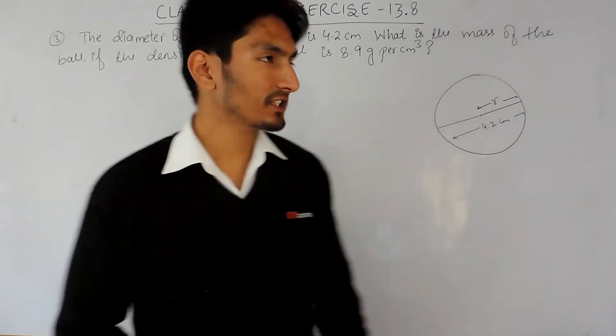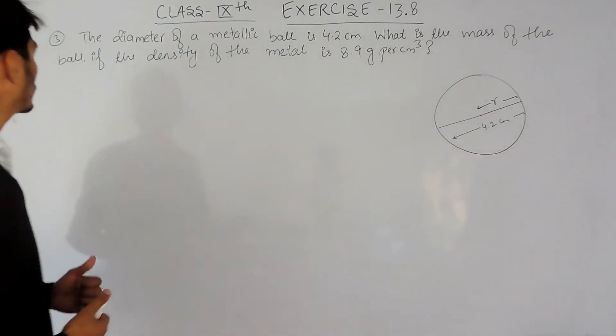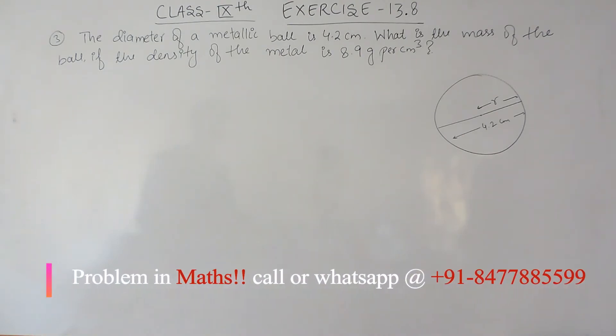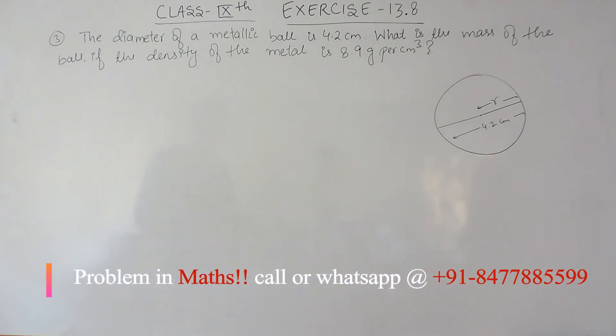Hello everyone, in this video we are going to solve question number third of exercise 13.8. The question says: the diameter of a metallic ball is 4.2 centimeter. What is the mass of the ball if the density of the metal is 8.9 gram per centimeter cube?